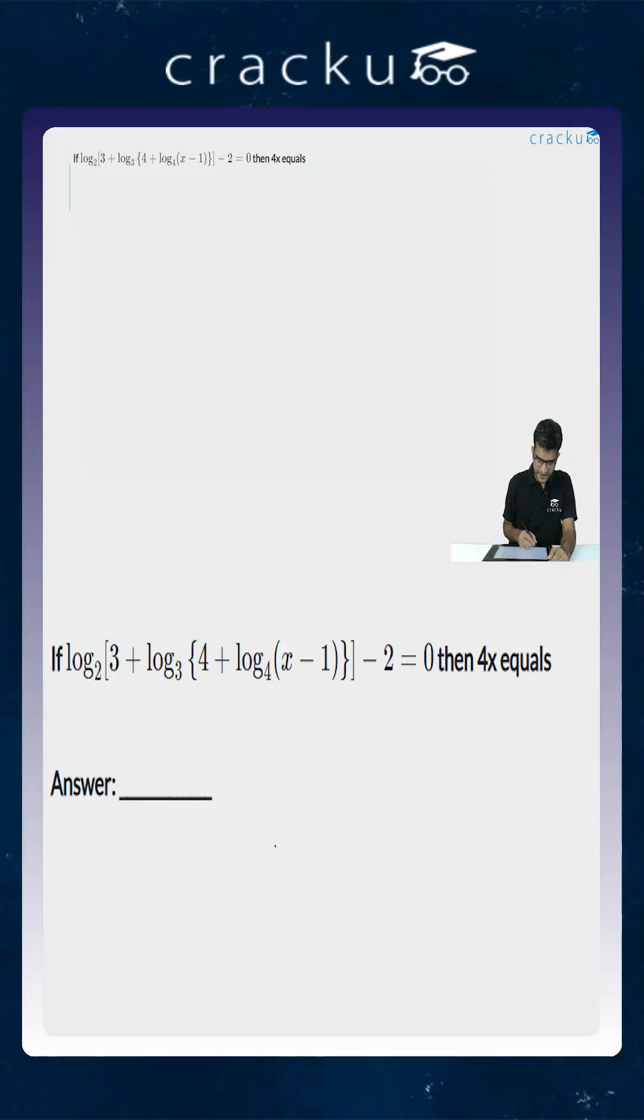In this question, we are given an equation. We are told that log of 3 plus log of 4 plus log of x minus 1, there are different bases, is minus 2 is equal to 0. And we are asked to calculate the value of 4x.